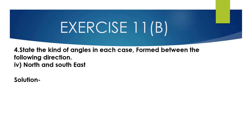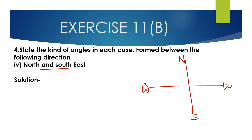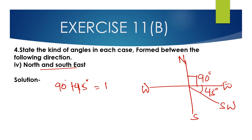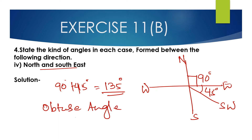Question number 4, fourth bit: State the kind of angles formed between the direction north and southeast. From north to east is 90 degrees and east to southeast is 45 degrees. So 90 plus 45 is 135 degrees, which is more than 90 degrees but less than 180 degrees. So this is an obtuse angle. The angle formed between north and southeast is an obtuse angle.